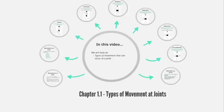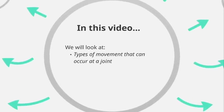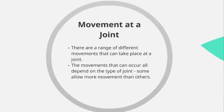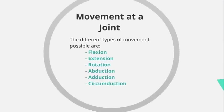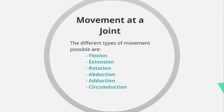Chapter 1.1: Types of movement at joints. In this video we will look at the different types of movement that can occur at a joint. There are a range of different movements that can take place, and these movements all depend on the type of joint itself, so some joints allow a lot more movement than others. The types of movement we need to be aware of are: flexion, extension, rotation, abduction, adduction, and circumduction.